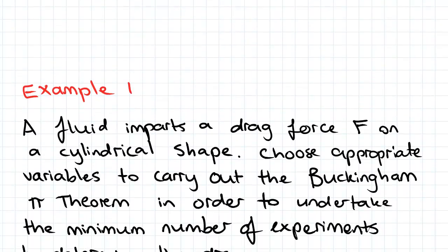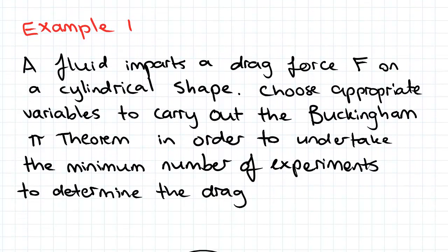So here's our example. A fluid imparts a drag force F on a cylindrical shape in space. Choose appropriate variables to carry out the Buckingham Pi theorem in order to undertake the minimum number of experiments to determine the drag.